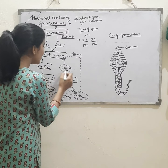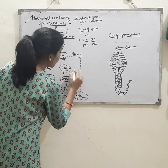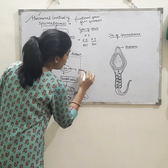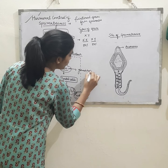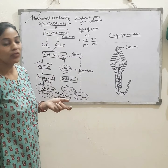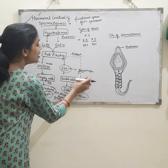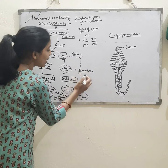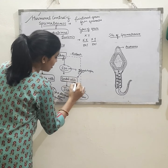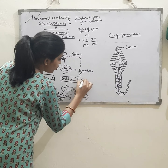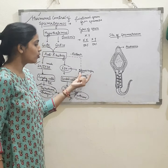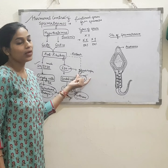LH and FSH are known as gonadotropin hormones. They are called gonadotropin hormones because these hormones act on the gonads — specifically the Sertoli cells, which are part of the testes.